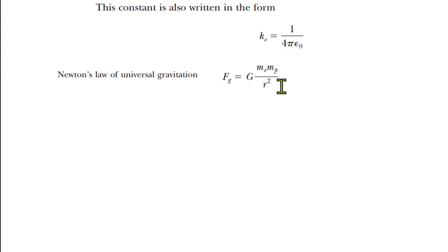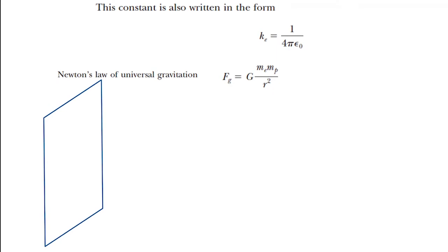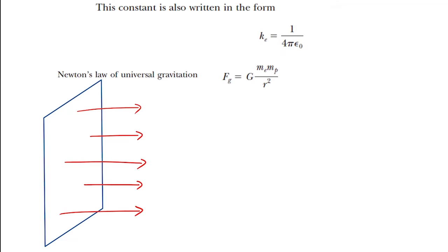Earth is not a point mass, but if you're far enough away it does look like a point mass. Consider the easier case: an infinitely large sheet generating a field. The field is coming out parallel in that direction. If your body is here with positive charge q, and these are positive charges — you can think of this as just the gravitational field downward too.